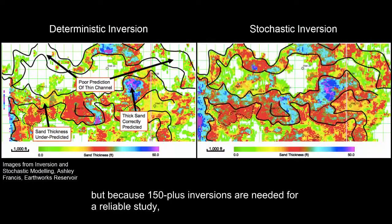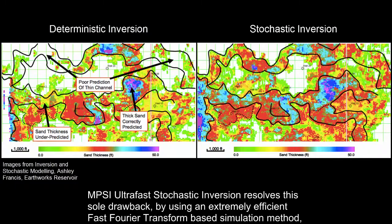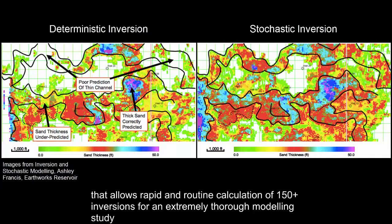But because 150 plus inversions are needed for a reliable study, and previously this has been a very slow, costly process, it has not been widely adopted. MPSI ultrafast stochastic inversion resolves this sole drawback by using an extremely efficient fast Fourier transform based simulation method.